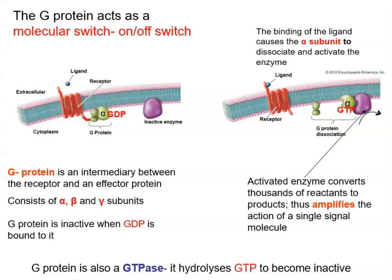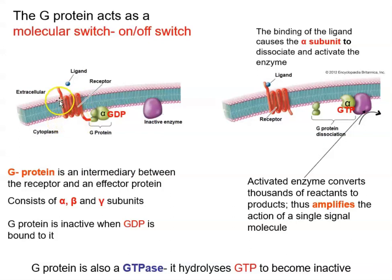The G-protein acts as a molecular switch — it can be turned on and it can be turned off. Looking at this membrane, we have a receptor that is a protein with a long polypeptide embedded in the membrane, spanning the membrane seven times. There is an extracellular domain sticking out for the ligand to bind, and an intracellular domain that interacts with the actual G-protein.